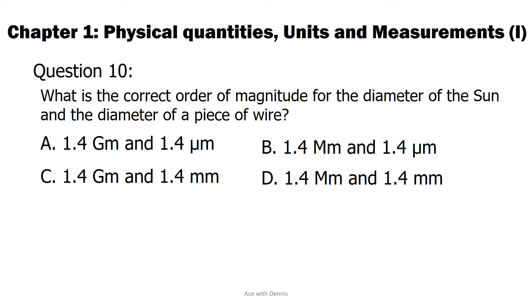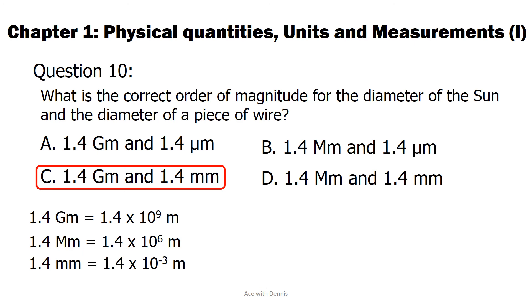The answer is C. 1.4 gigameters and 1.4 millimeters. 1.4 gigameters equals 1.4 times 10 to the power of 9 meters. 1.4 megameters equals 1.4 times 10 to the power of 6 meters. 1.4 millimeters equals 1.4 times 10 to the power of negative 3 meters. 1.4 micrometers equals 1.4 times 10 to the power of negative 6 meters. Actual diameter of the sun is about 1.3927 gigameters. The diameter of a typical wire is in millimeter range. The length in micrometer range is too tiny for the diameter of a typical wire.